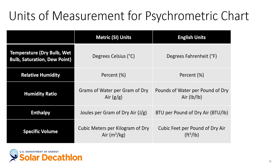I want to acknowledge that the psychrometric charts used in this episode are expressed in SI or metric units. In the United States, it's more common to use English units. We've provided a table showing the terms in both systems. Note that absolute and relative humidity are expressed as ratios or percentages, so the values are the same in either system. One notable exception: in the English unit system, absolute humidity is sometimes measured in grains of moisture per pound of dry air. There are 7,000 grains in a pound — so a humidity ratio of 0.01 equates to 70 grains of moisture per pound of dry air.